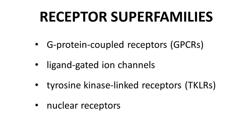Next are the tyrosine kinase-linked receptors, or TKLRs, which are also membrane-bound. TKLRs are often targets of cancer drugs. Finally, we have the nuclear receptors, which are not membrane-bound and are found in the nucleus. Endogenous ligands for nuclear receptors include various steroids. There are other ways to categorize receptors, but this method is common.